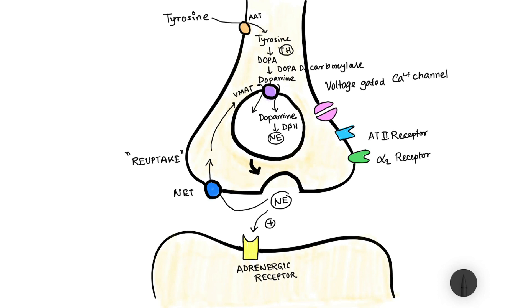This norepinephrine at the same point of time acts on the alpha-2 adrenergic receptor and this alpha-2 receptor inhibits the release of norepinephrine from the vesicles.